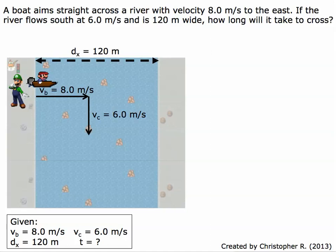In this example, we have a boat crossing a river. A boat aims straight across a river with a velocity of 8 meters per second to the east. If the river flows south at 6 meters per second and is 120 meters wide, how long will it take to cross?